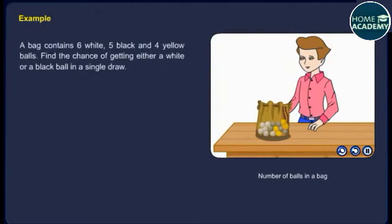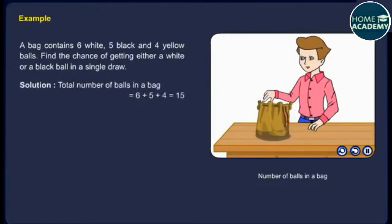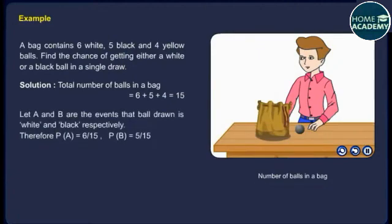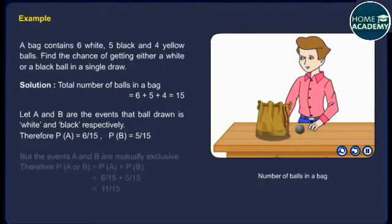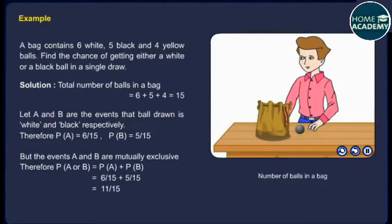A bag contains 6 white, 5 black, and 4 yellow balls. Find the chance of getting either a white or a black ball in a single draw. Solution. Total number of balls in the bag = 6 + 5 + 4 = 15. Let A and B be the events that the ball drawn is white and black respectively. Therefore P(A) = 6/15 and P(B) = 5/15. But the events A and B are mutually exclusive. Therefore P(A or B) = P(A) + P(B) = 6/15 + 5/15 = 11/15.